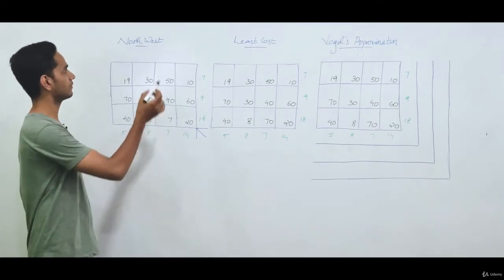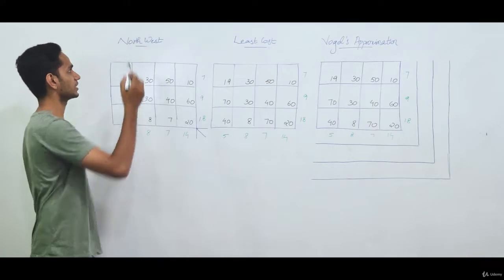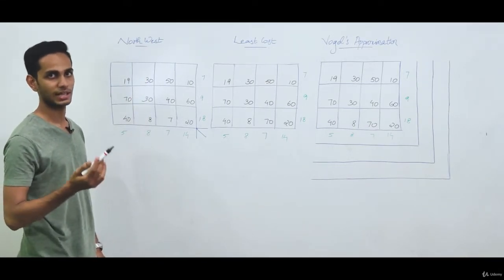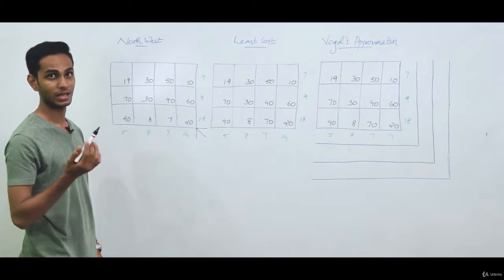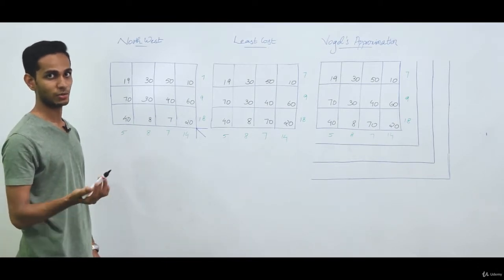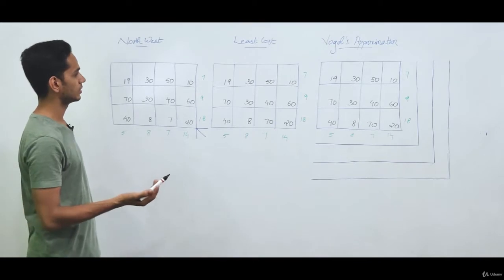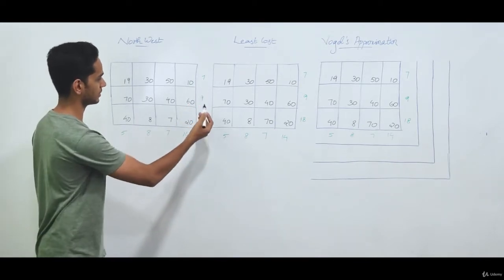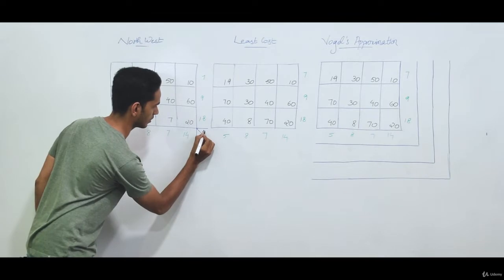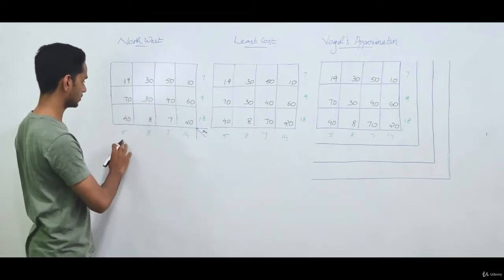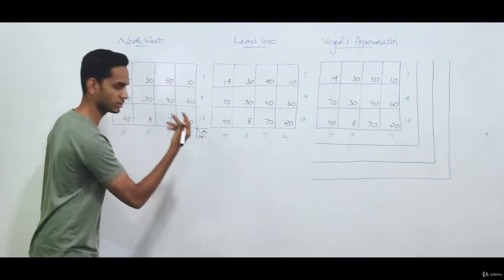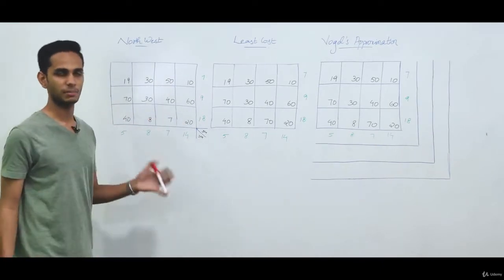The first method is the Northwest rule. The first thing we need to do is check whether our case study is balanced or not. The total supply is 7 plus 9 plus 18, which comes to 34. The total demand is 5 plus 8 plus 7 plus 14, which also comes to 34. So this is a balanced problem.